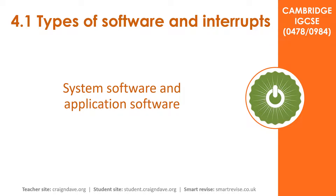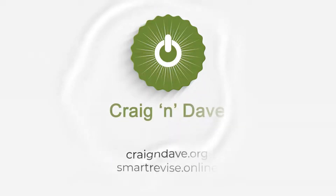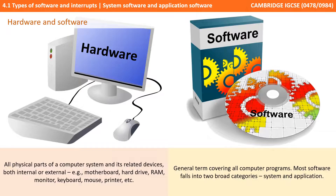In this video we provide an overview of system software and application software. Everything that makes up a computer system falls into one of two very broad categories: we have hardware and software.